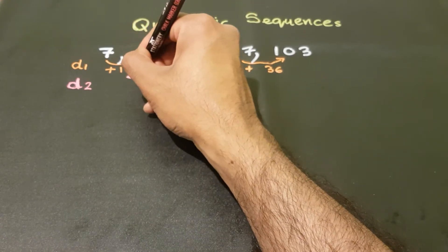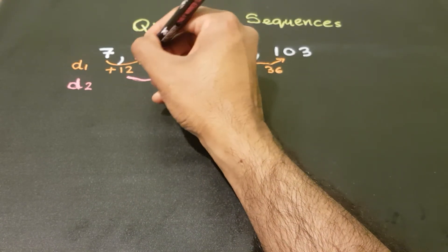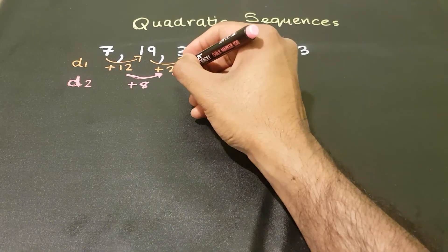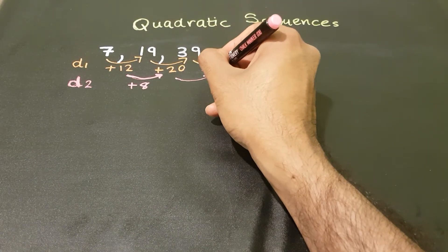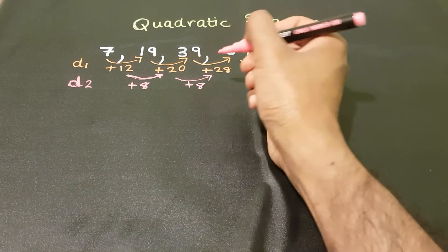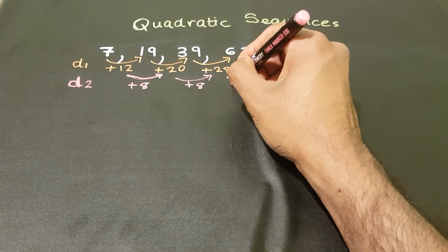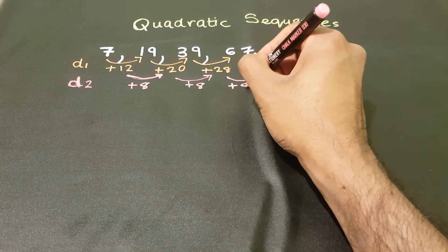Right, so here I need to find out how do I go from 12 to 20. I add 8, 20 to 28 I still add 8, 28 to 36 and again, I add 8.